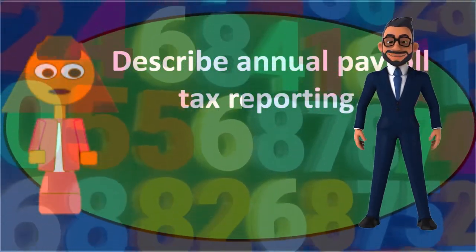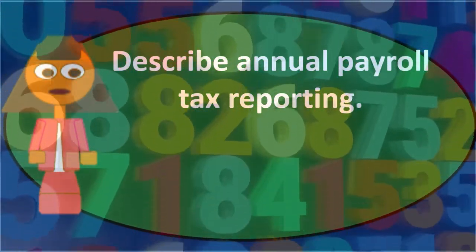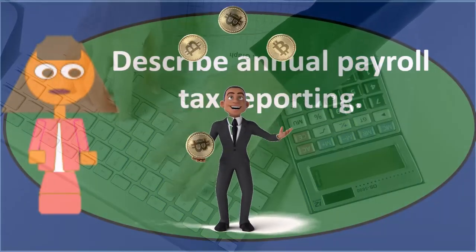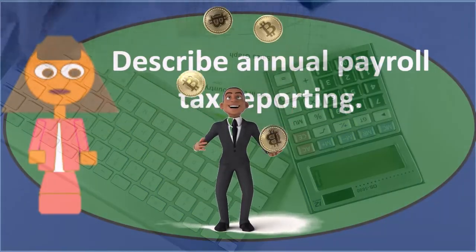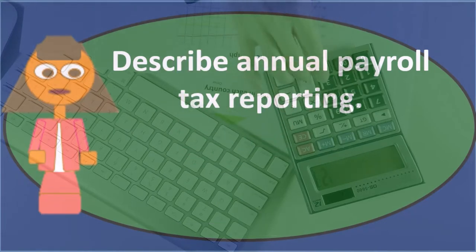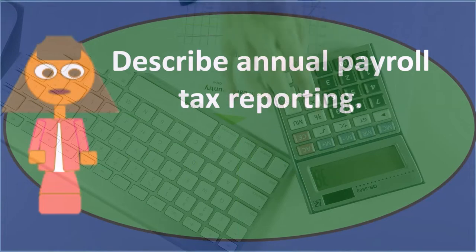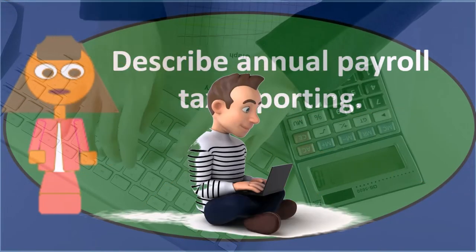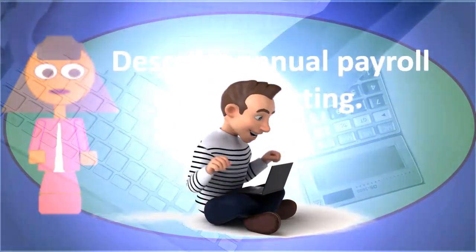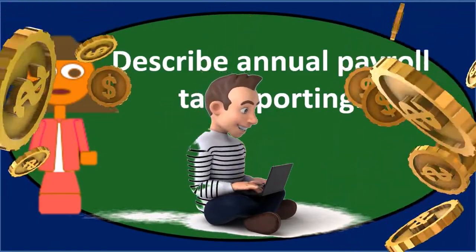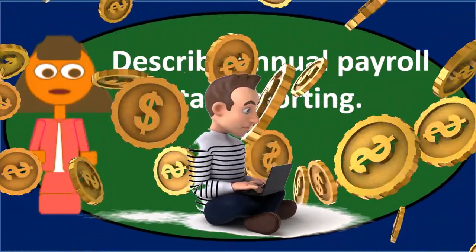If for whatever reason SUTA was not paid, then you may have to pay more FUTA, and that will show in the annual form as well. This is an information return — we should have already paid FUTA throughout the year, so whatever the liability is should match what we have already paid to the government.